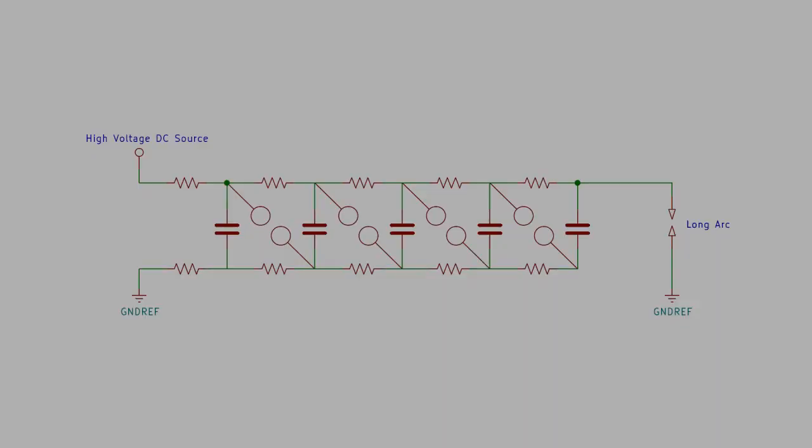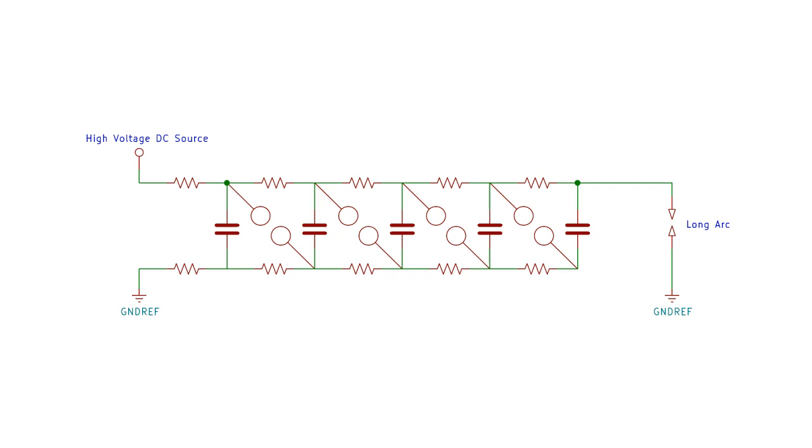A high voltage source charges up a bunch of capacitors in parallel through large resistors, and when they reach a certain threshold an arc is formed in the spark gaps between them and they're suddenly connected in series. The resistance of the arcs across the spark gaps is several orders of magnitude lower than the charging resistors, so for the short duration of the high voltage pulse you effectively have a circuit where all the capacitors are just connected in series.